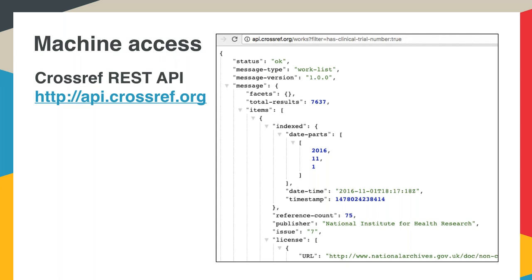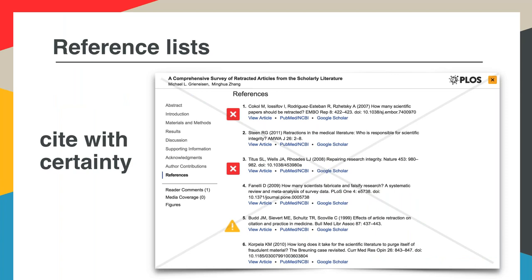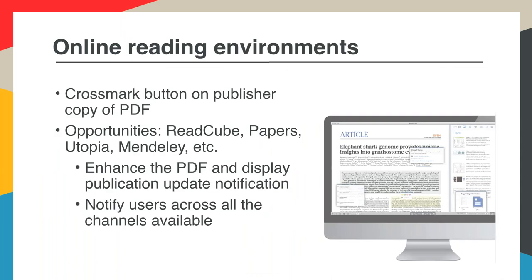It's also an important part of Crossmark that all of the metadata is available in machine-readable formats through our APIs — this is our REST API. We also have OAI-PMH access to metadata, and anyone can access and query it through any of the metadata fields. This opens up interesting opportunities for propagating this metadata. For example, a publisher could check their references against the Crossref database, find out when there have been updates to those publications, and flag that in the reference section — a really useful resource for readers. By putting the Crossmark button on PDFs, you can ensure that wherever those PDFs go, the status updates will follow, and there's always a link back to the definitive copy on the publisher's website.